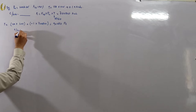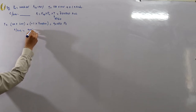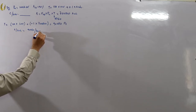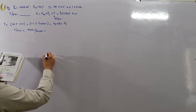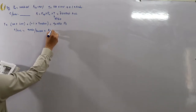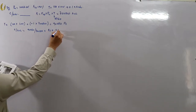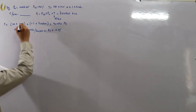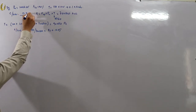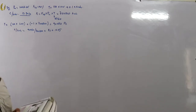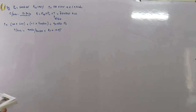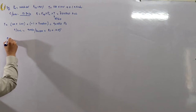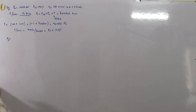The cost per kilowatt hour is the total cost divided by the total number of units, which comes out to be rupees 0.1285 or 12.85 paisa.